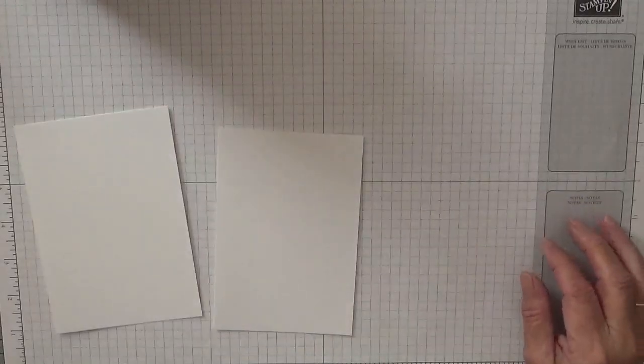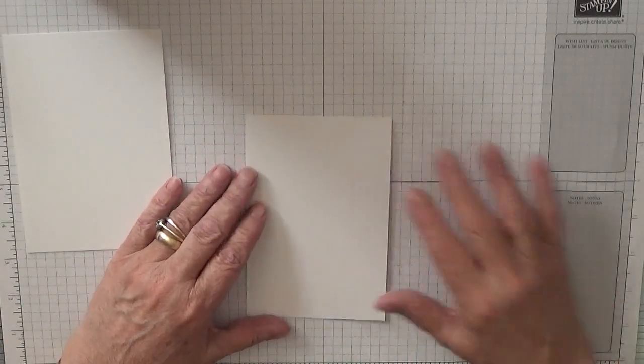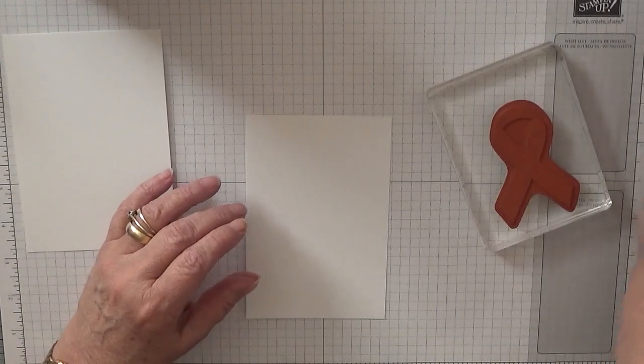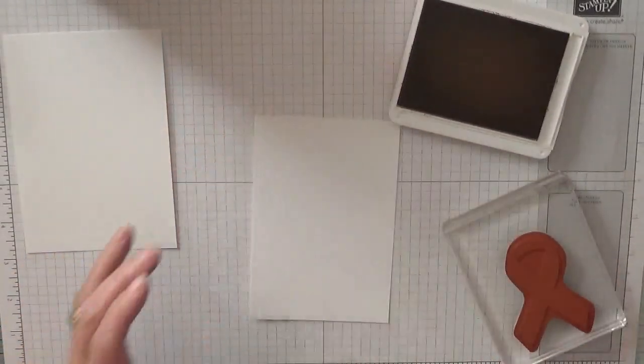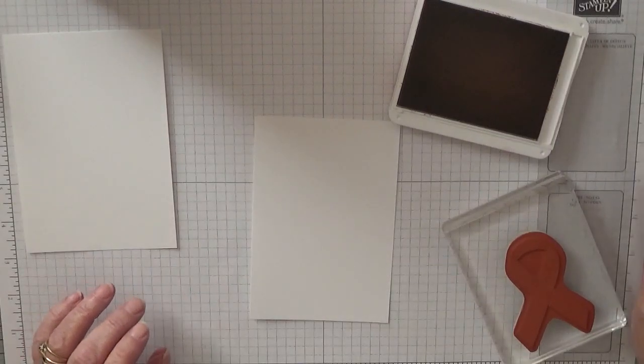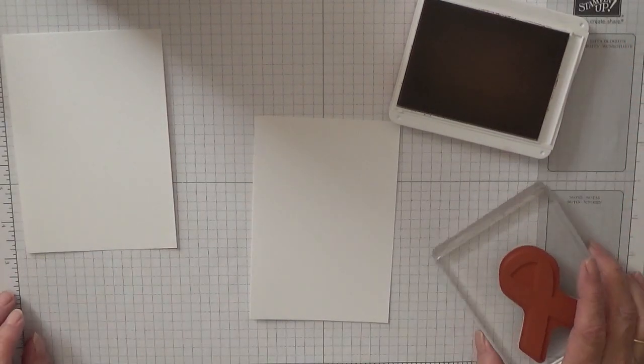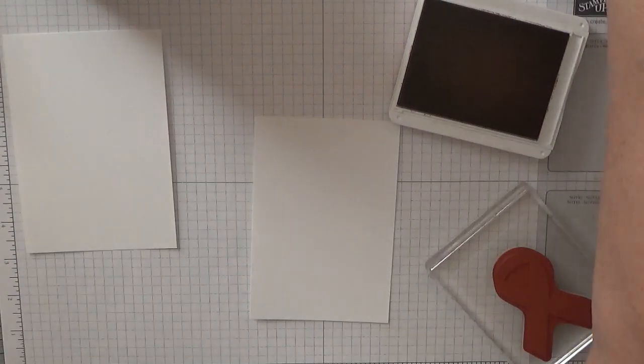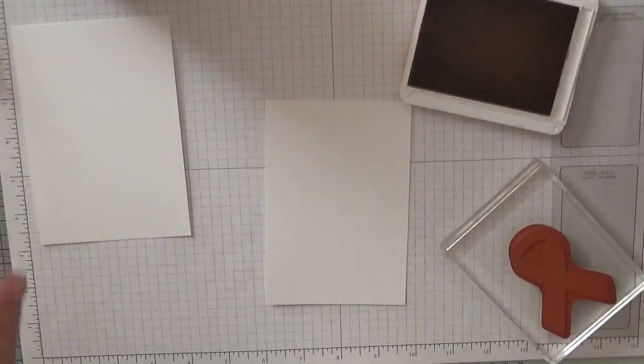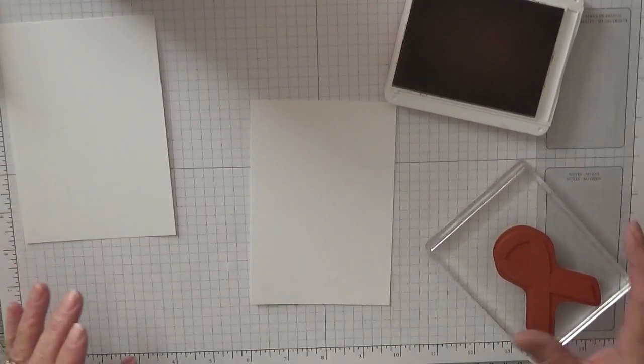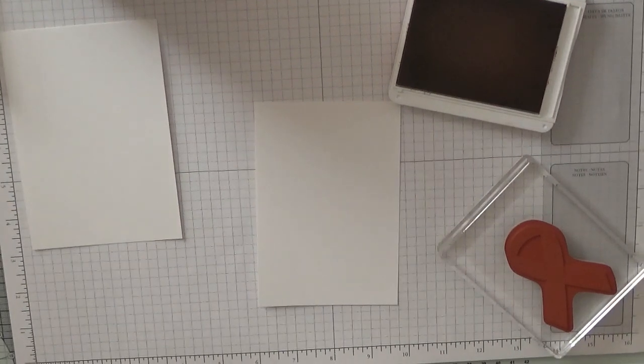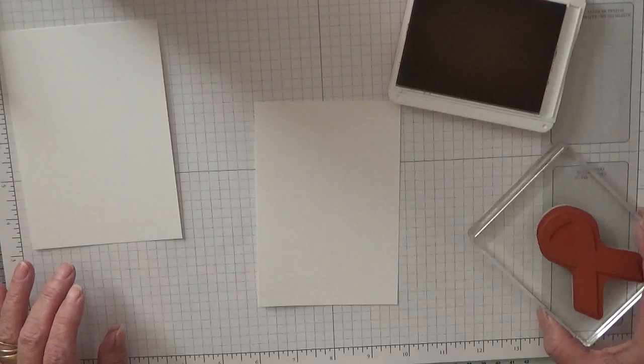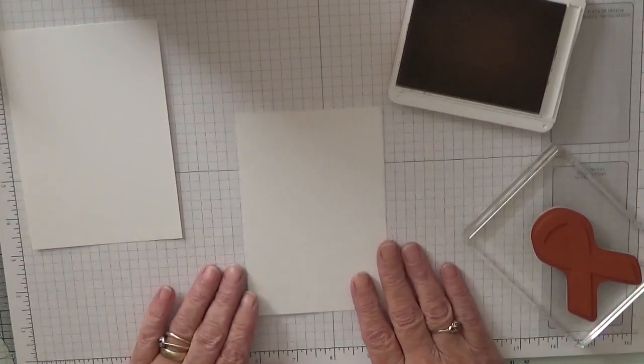So to start off with, I inked the ribbon, stamped the ribbon. I'm using Blushing Bride ink. I've got a shadow for some reason, I don't know why I've got a shadow—must be the way the sun is today. Sorry about that.